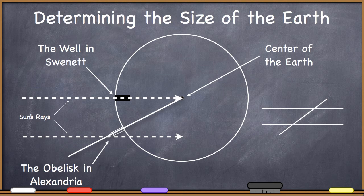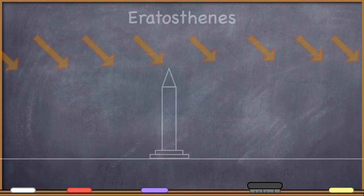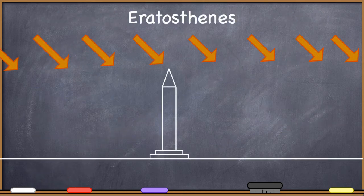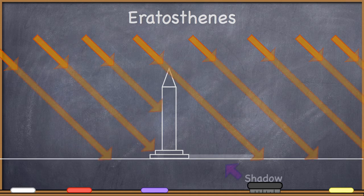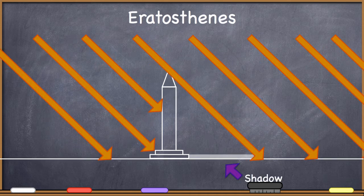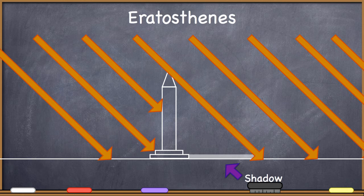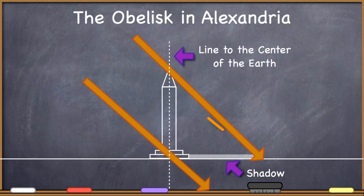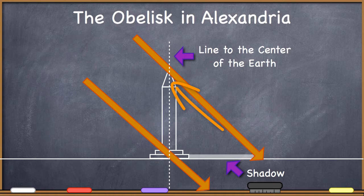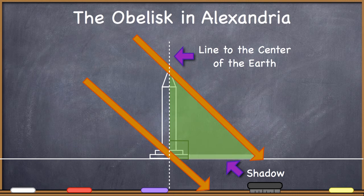Let's zoom in to the obelisk in Alexandria. The sun's rays are coming in at some angle, hitting the tip of the obelisk and casting a shadow at the same moment that the sun's rays are falling down the well in Swenet. How can Eratosthenes calculate this angle from the sun's rays to the line down to the center of the earth through the obelisk? Notice that a right triangle is being created here with the ground, the obelisk, and the sun's rays.